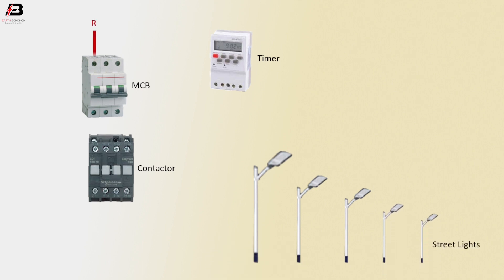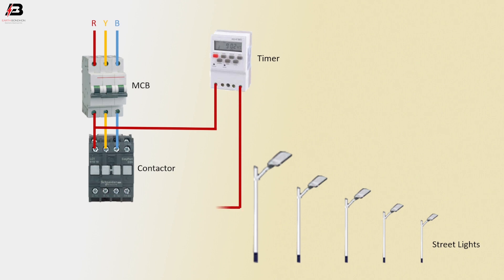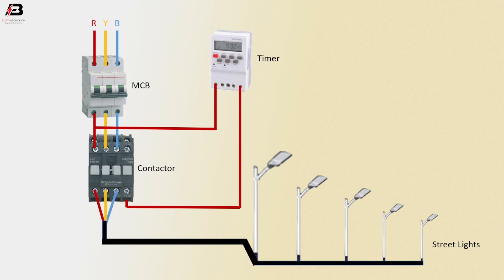First, phase connection to MCB circuit breaker. Second phase connection to MCB. Third phase connection to MCB. Three-phase connection to magnetic conductor from MCB. Phase connection to timer. Phase connection outgoing from timer to connect magnetic conductor coil connection. Three-phase connection outgoing from magnetic conductor to connect street light.